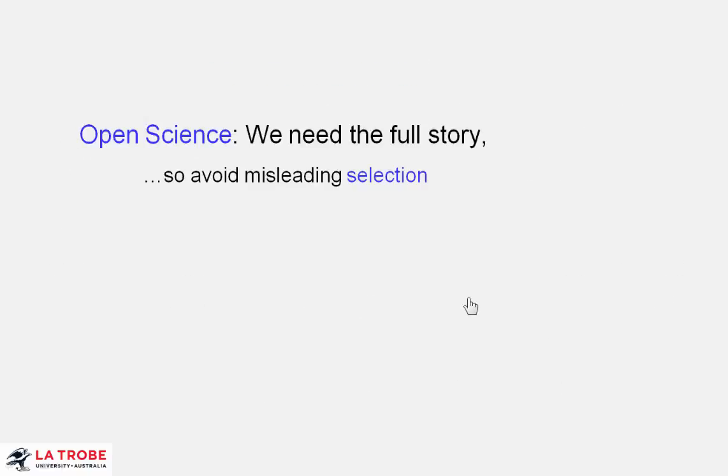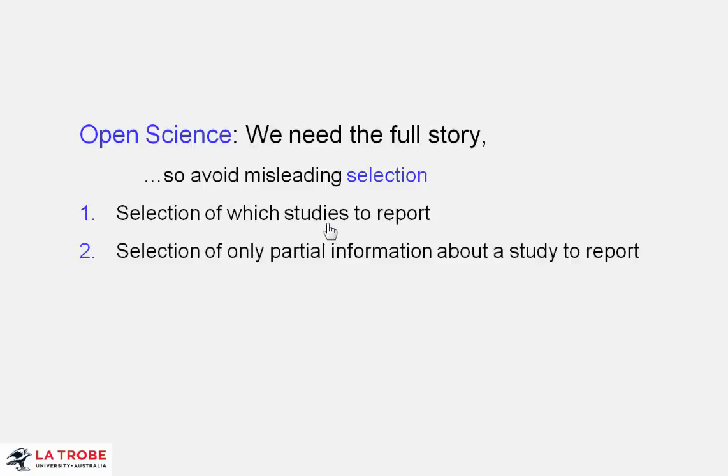The third major topic is selection and the way selection can mislead. Our open science slogan is we need the full story. And there are three ways I mentioned where selection can mislead. One, most obviously is if only some studies are reported, only selected studies are reported.